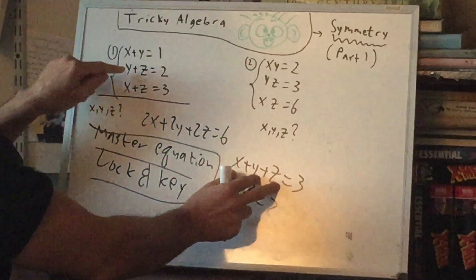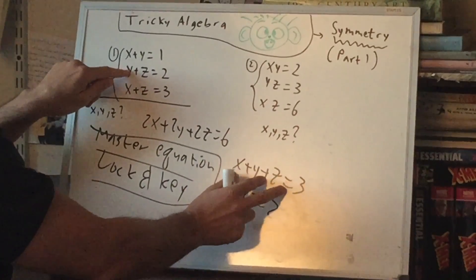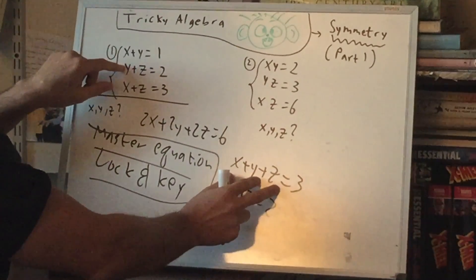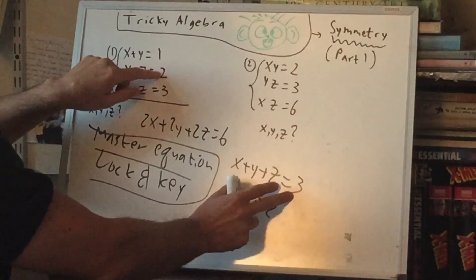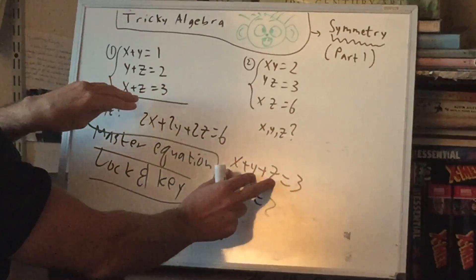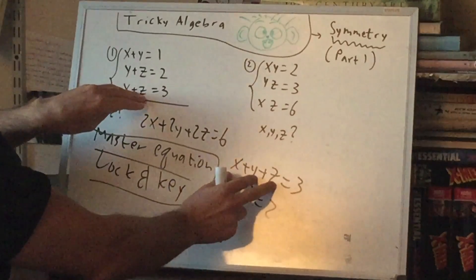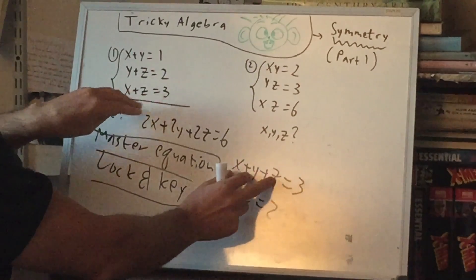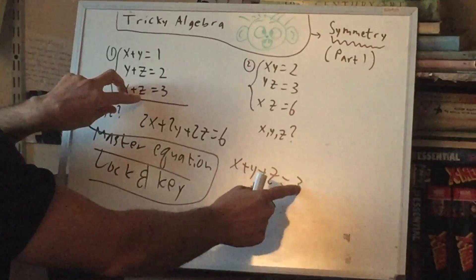If we combine this with this one, so we take the master equation, subtract this one, we're left with just an x. So the x would be 3 minus 2, or 1. Take this, subtract this one, we're left with just y, because this has x, y, z, only x and z. So y would be 0.